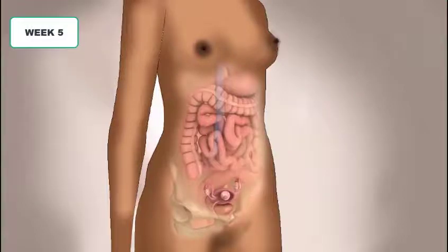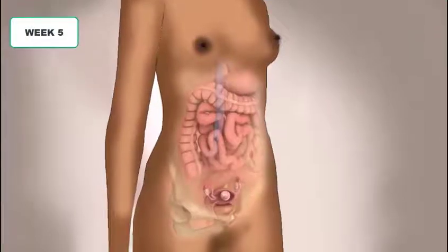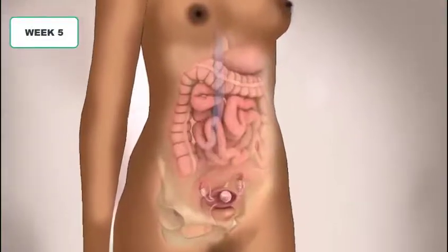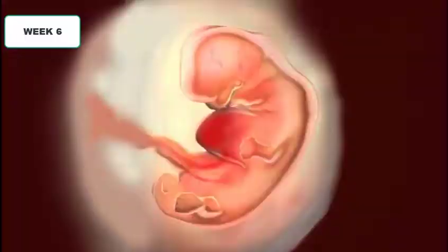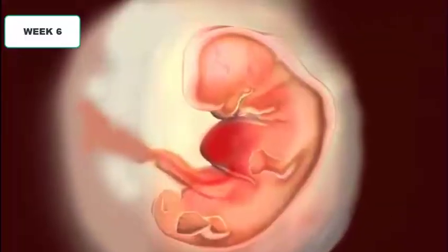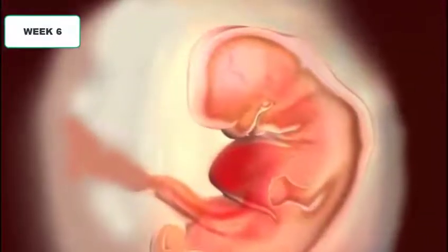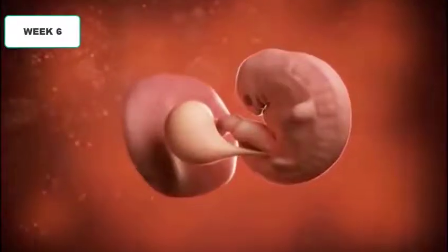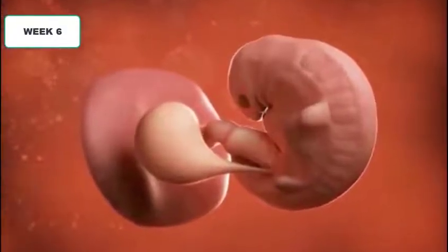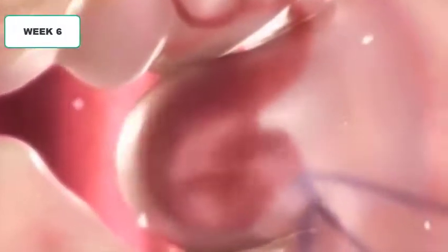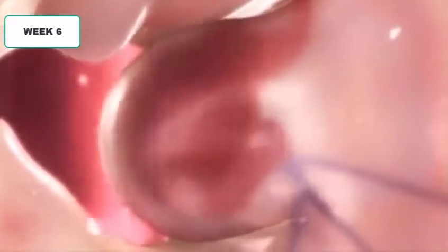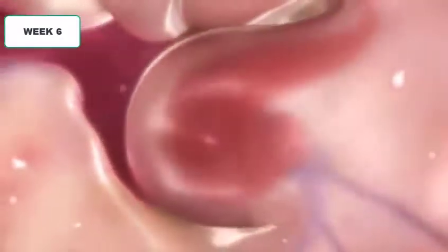Even if the embryo is so tiny, an ultrasound can identify the gestational sac at this stage. At week six the cranial port have fused and started generating the brain stem. The embryo is curved and has a long tail. In addition, the heart has formed and started beating. The embryonic heart is so fast that it doubles the rate of an adult human heart.